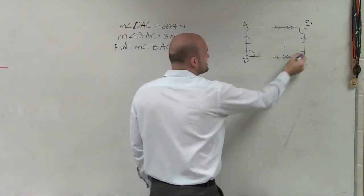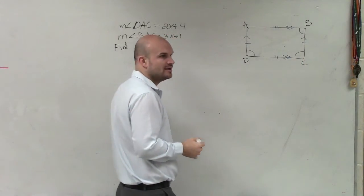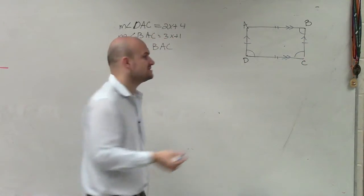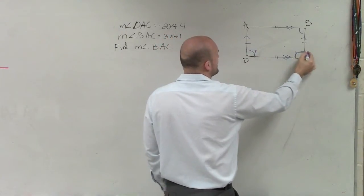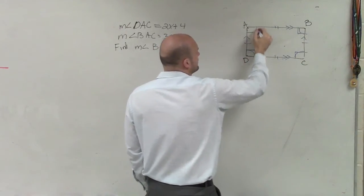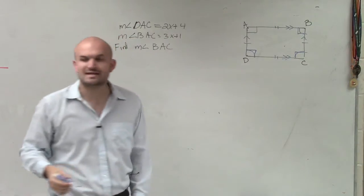And we also know that consecutive sides are supplementary. But what was more important about all this is the measure of each angle of a rectangle is equal to what? 90. Yeah, all the angles are 90 degrees.